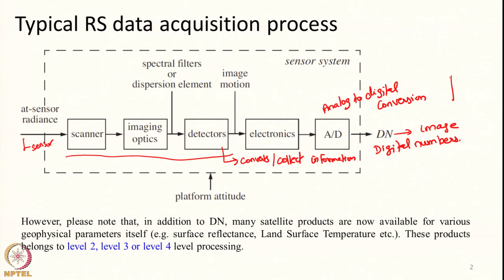The signal will then be passed on to electronics. The imaging electronic system will process the collected radiance further as detected by the detector. Then it will undergo analog to digital conversion and will be stored as digital numbers. This essentially forms the image — a 2-dimensional matrix of DNs is essentially a remote sensing image.